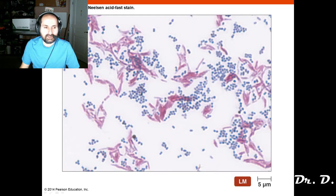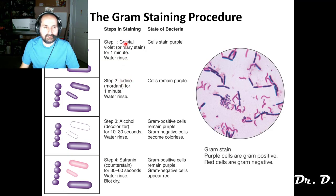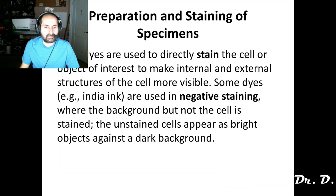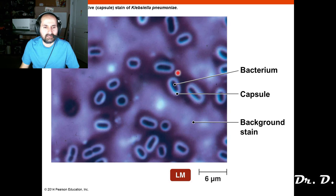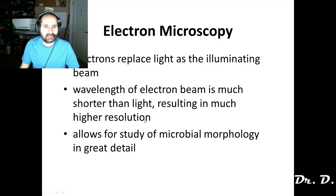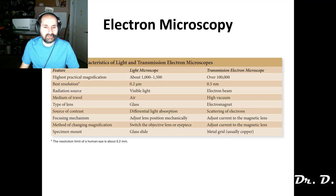In the gram stain: crystal violet is the primary stain, iodine is the mordant, alcohol is the decolorizer, and safranin is the counterstain — that'll help on the practical as well. Negative staining is when you stain the background but not the thing you're looking at. In the capsule stain, everything is stained except the capsule — even the bacteria itself has been stained.